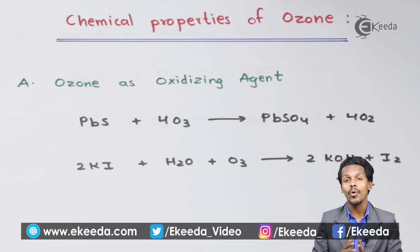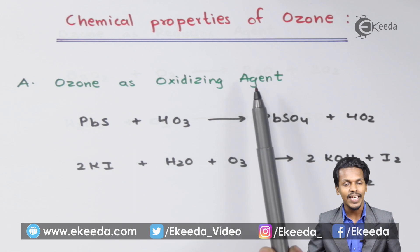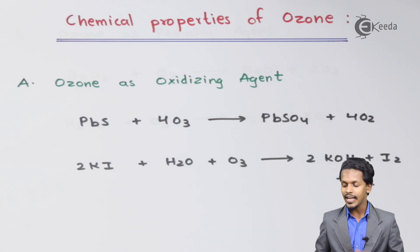Friends, in this topic we are going to talk about the chemical properties of ozone. Starting with the first one, ozone can be used as an oxidizing agent. For example, we have certain examples.